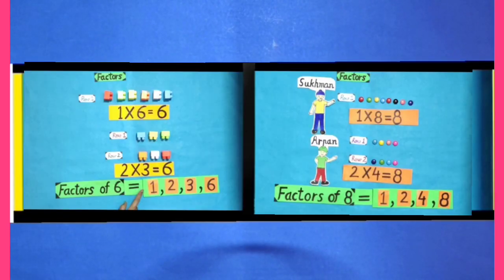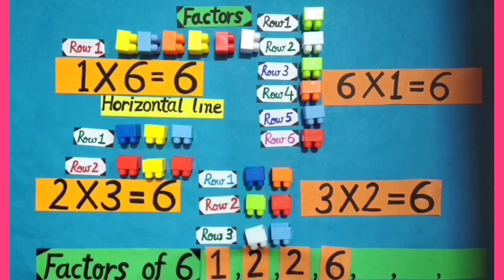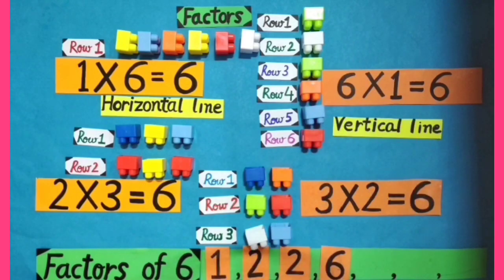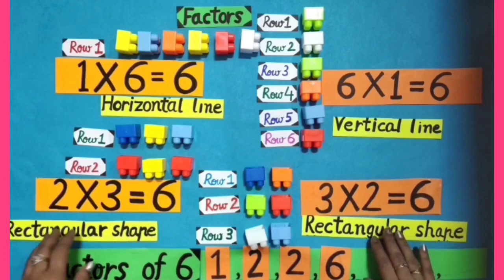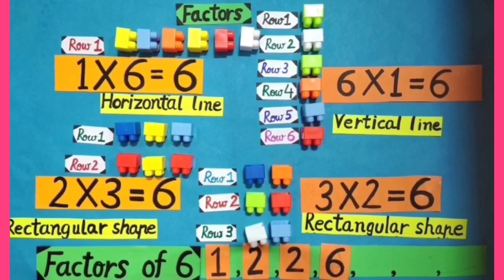We have already done factors of 6 and 8. Factors of 6 are 1, 2, 3, 6, and factors of 8 are 1, 2, 4, and 8. While doing factors of 6 with the help of blocks, we can see that whenever we get a horizontal line, vertical line, or rectangular shape, we get the factors of 6.